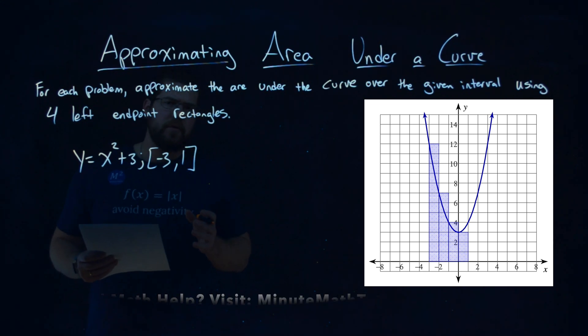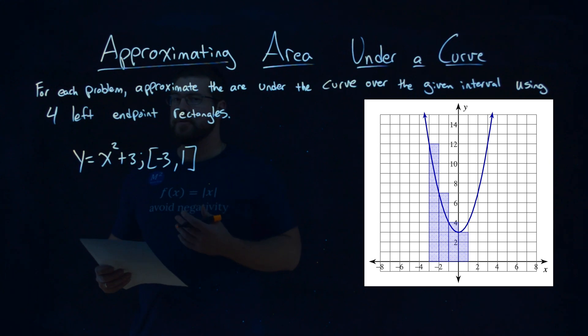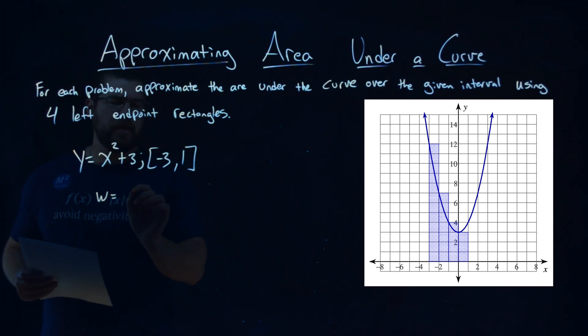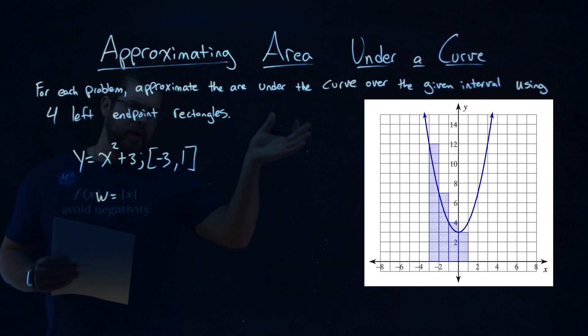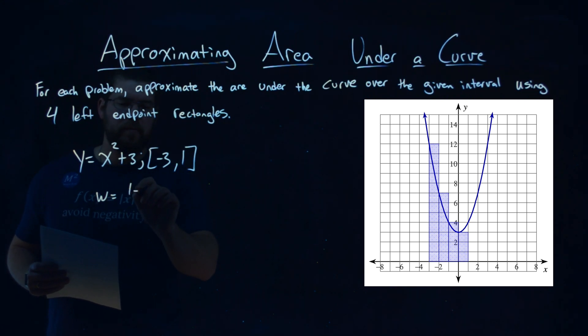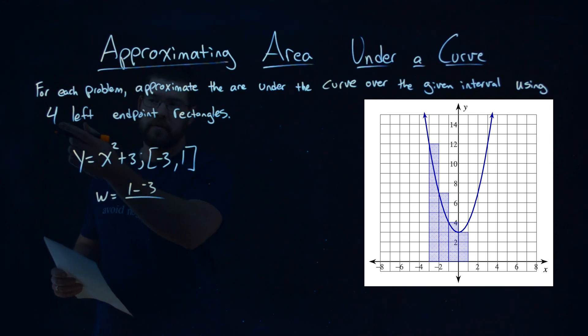Now the first thing I want to do is find the width of each rectangle. So to do that, I'll call it w. I take my right endpoint of my domain here, 1, minus the first part, negative 3, and divide it by the number of rectangles, which is 4.